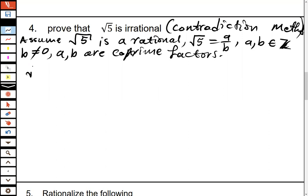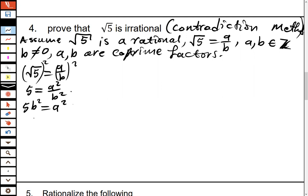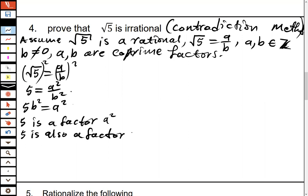From √5 = a/b, we square both sides to get 5 = a²/b². Cross-multiplying gives 5b² = a². This implies that 5 is a factor of a², which mathematically also means 5 is a factor of a. Since 5 divides a, we can write a = 5k for some integer k.